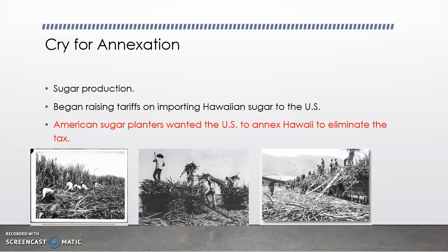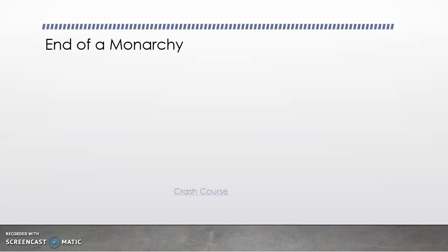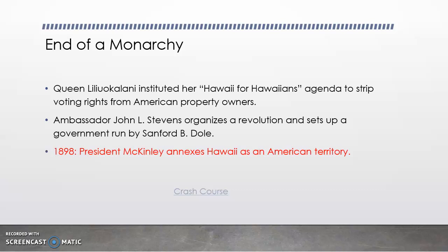Before Hawaii is part of the U.S., there's a huge tariff — a tax — on importing sugar. A lot of American sugar plantation owners are in Hawaii, and they don't want to spend all this money shipping it into the U.S. So they say, hey, annex Hawaii, let it become a territory, and then there's no more tariff. They do this with a little bit of pushback from the local Hawaiians. The queen — whose last name is too hard to say — has a Hawaii for Hawaiians agenda, working to strip voting rights from American property owners in Hawaiian affairs. So ambassador John Stevens will organize a revolution, setting up a government run by Sanford B. Dole. Then in 1898, President McKinley is going to annex Hawaii. It becomes an American territory, and later on it becomes a state within the Union.